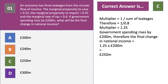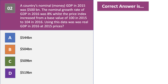Let's move on to question 2. The country's nominal or money GDP in 2015 was 500 billion dollars. The nominal growth rate of GDP in 2016 was 8%, whilst the price index increased from 100 to 104. Using this data, what was real GDP in 2016 at 2015 prices? Have a go at this question — press the pause button.